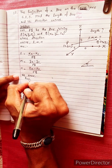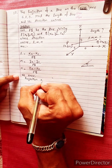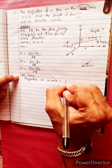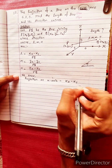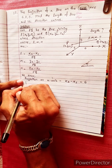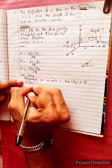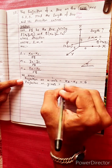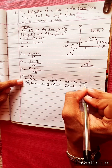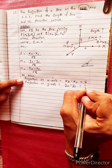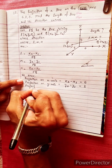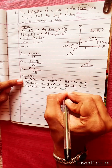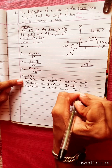We know the projection on the x-axis. The projection on the x-axis formula is x2 minus x1, which equals 6. The projection on the y-axis: y2 minus y1 equals 2. The projection on the z-axis: z2 minus z1 equals 3.